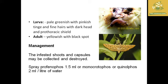For identification: the larva is pale greenish with a pinkish tinge. The head is dark, and hairs are present on the head. The adult is yellowish in color with black spots. This is the capsule borer species.